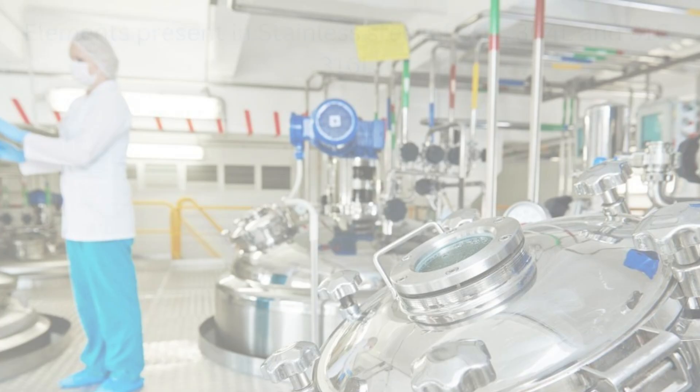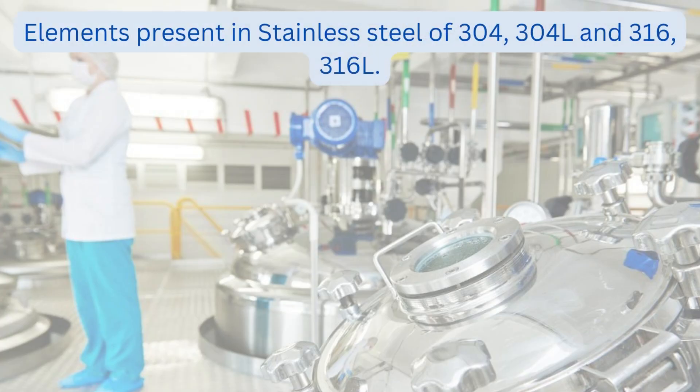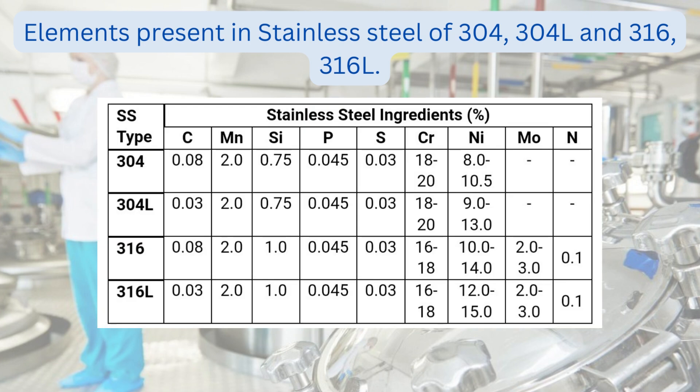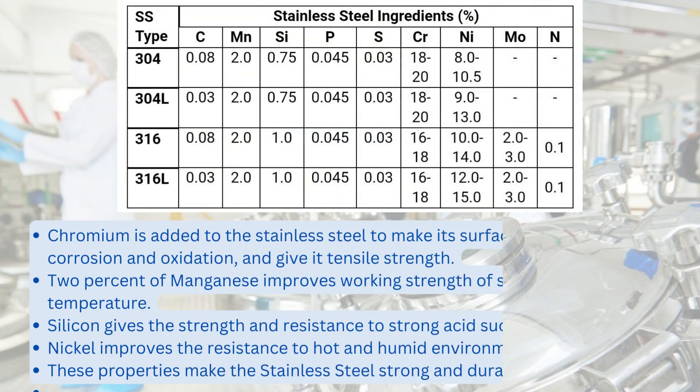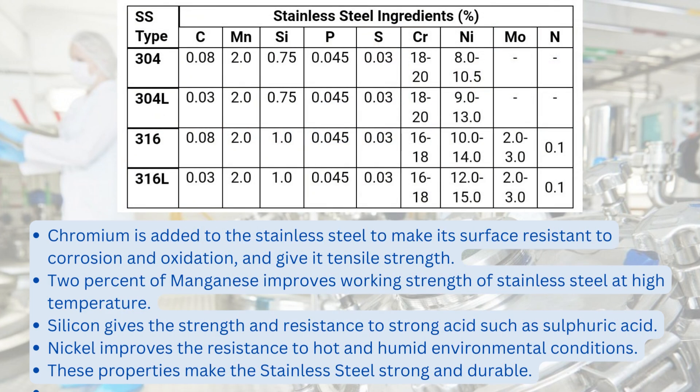Now let's talk about the elements present in stainless steel grades 304, 304L, 316, and 316L. Have a look at the percentage of different elements present in these types of stainless steel. Chromium is added to stainless steel to make its surface resistant to corrosion and oxidation, and to give it tensile strength.